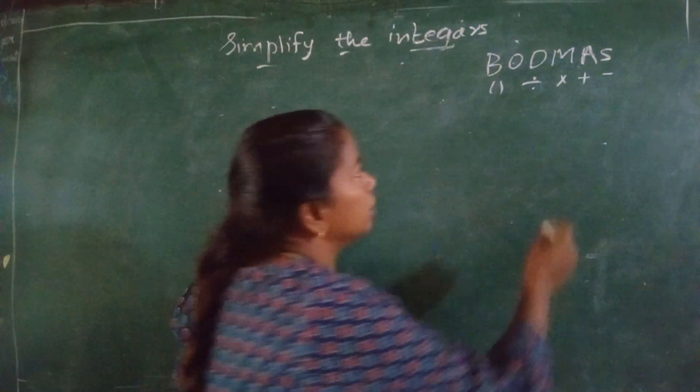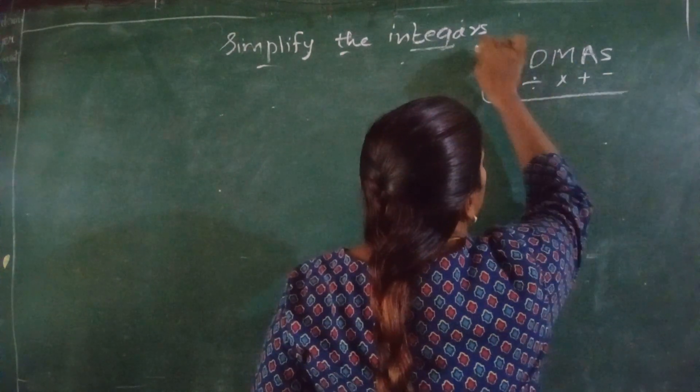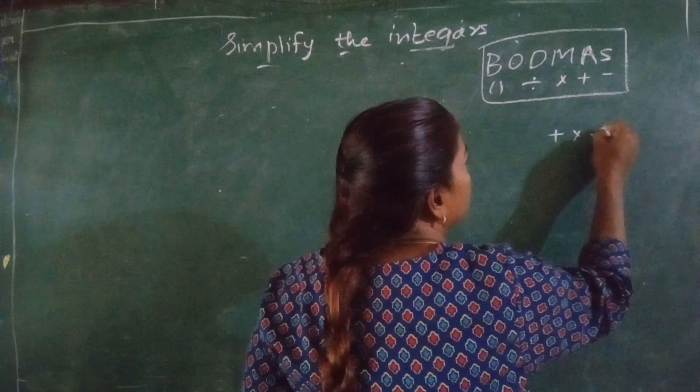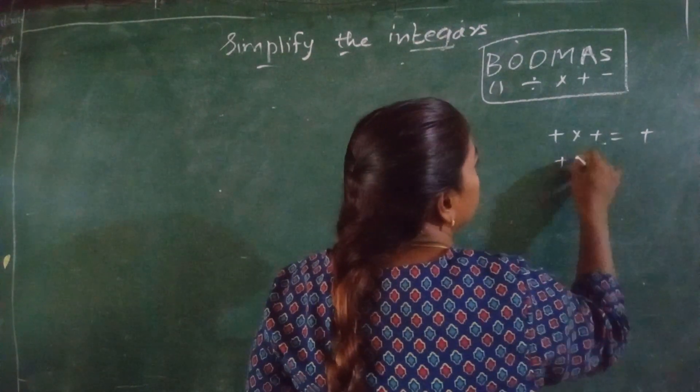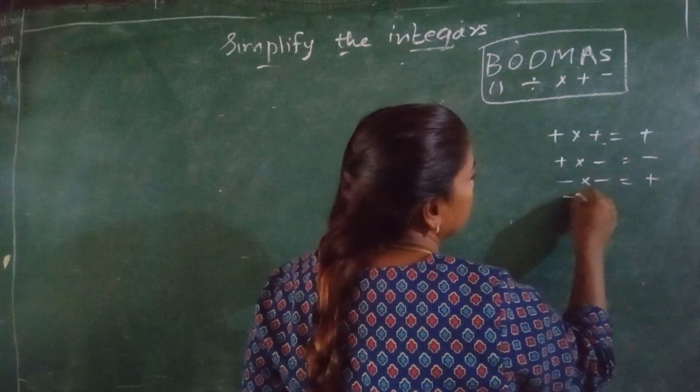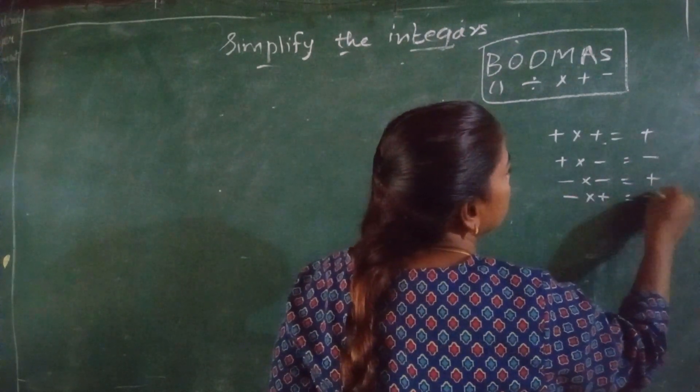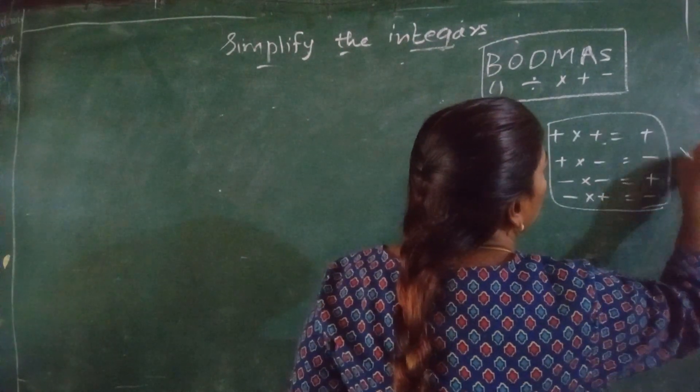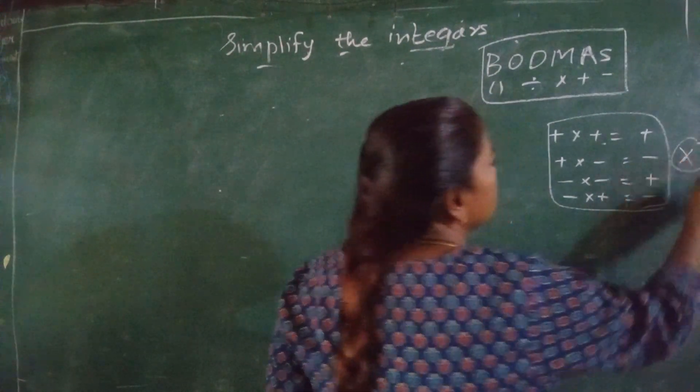One is the BODMAS rule which you have to keep in mind. The other is sign. Plus into plus, plus. Plus into minus, minus. Minus into minus, plus. Minus into plus, minus. So this is applicable for all multiplications.